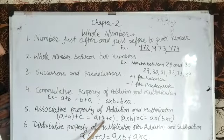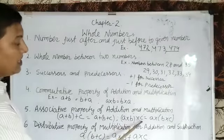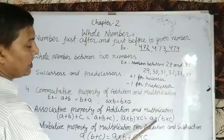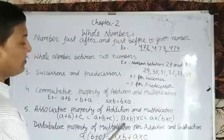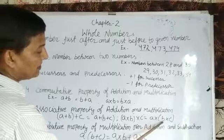By adding b plus c then adding a, same result. Similarly, a into b into c equals a into b into c. First solving a into b and then multiplying by c, we get the same answer by multiplying b into c then into a.